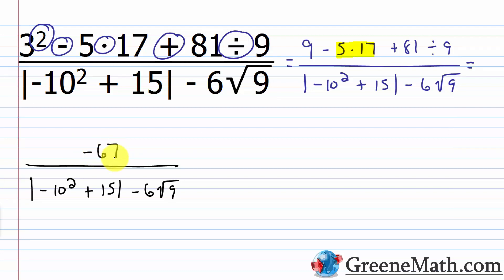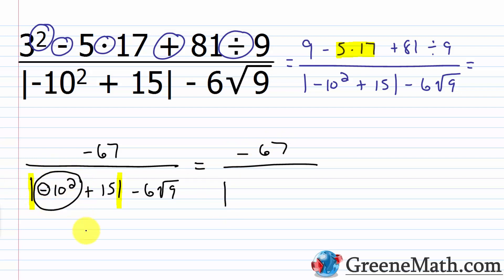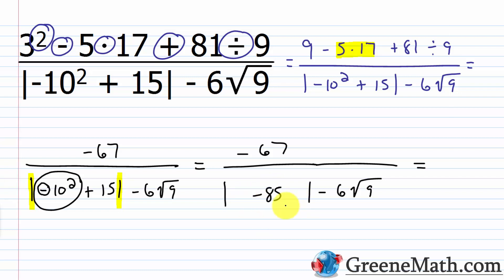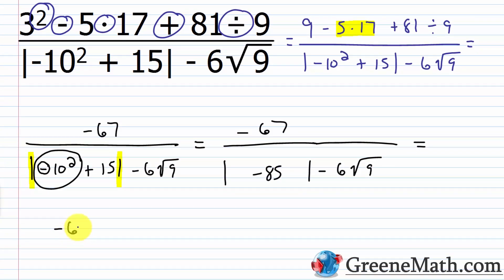The numerator is simplified. Now I work in the denominator. We have grouping symbols — the absolute value operation — so we start inside there first and reapply the order of operations. Inside we have negative 10 squared plus 15. The negative is not inside parentheses, so this is negative 1 times 10 squared, which is negative 1 times 100, giving negative 100. Then negative 100 plus 15 is negative 85. Taking the absolute value of negative 85 gives us 85. So we have negative 67 over 85 minus 6 times the square root of 9.